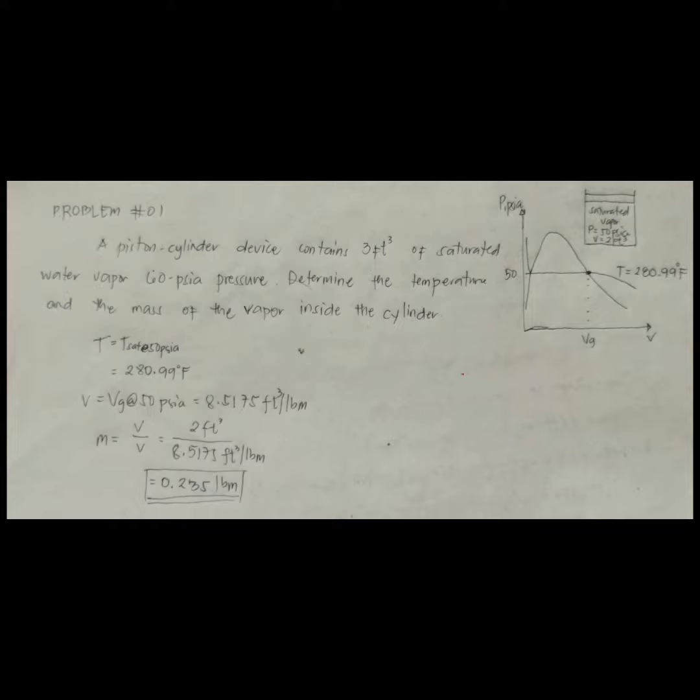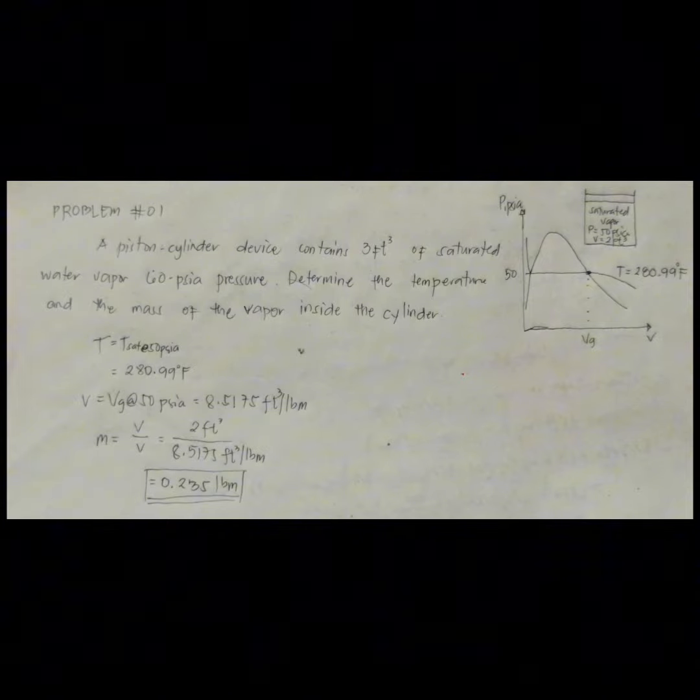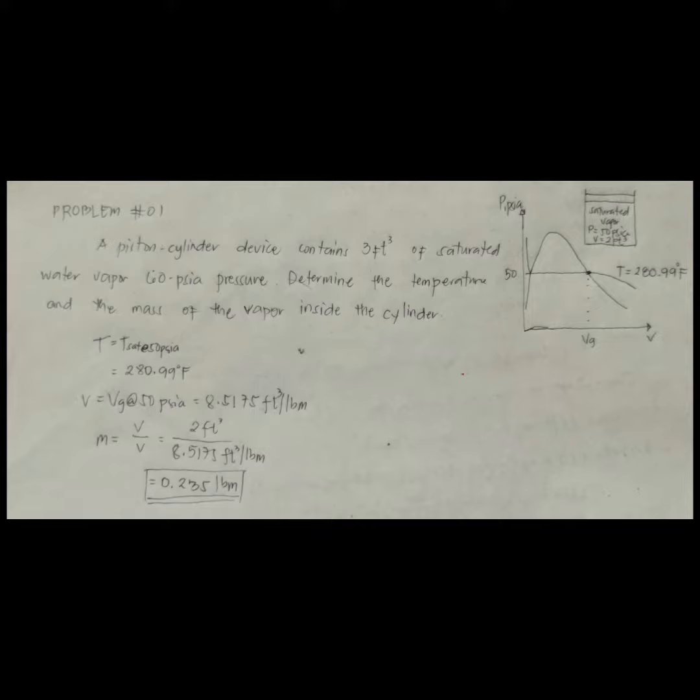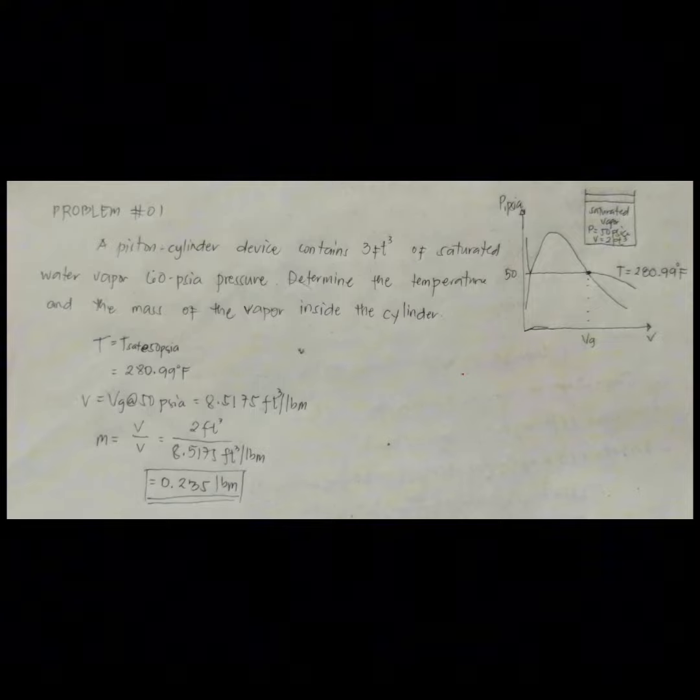The cylinder contains saturated water vapor. The temperature and the mass of vapor are to be determined. The state of the saturated water vapor is shown on a PV diagram.